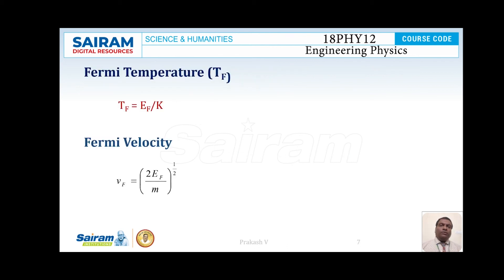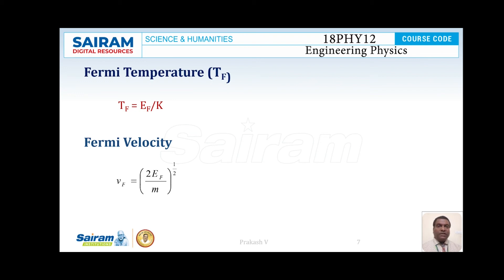Now I am going to take up what is Fermi temperature, denoted by symbol TF. It is the effective temperature of an electron gas at the Fermi level, and it is considered as Fermi temperature, which is given by TF = EF / K, where K is Boltzmann's constant.